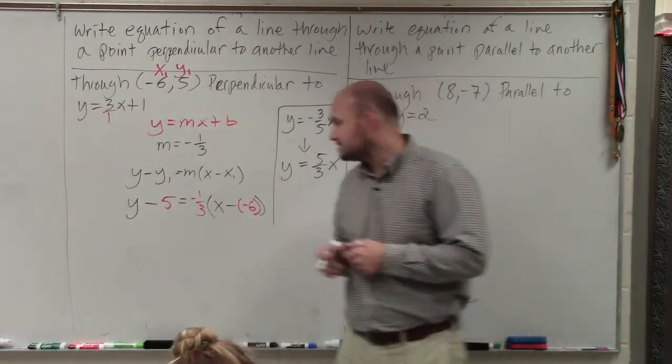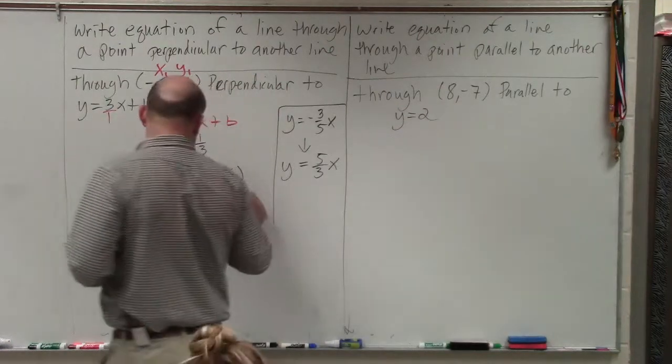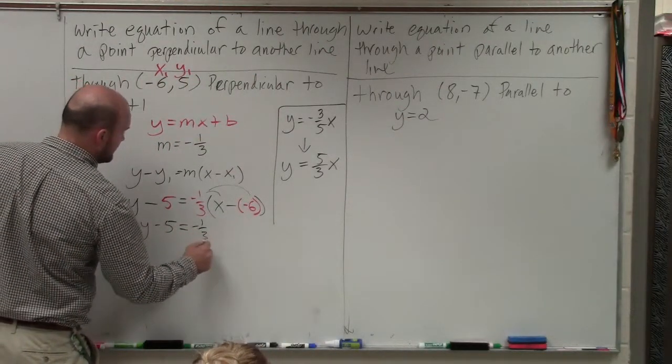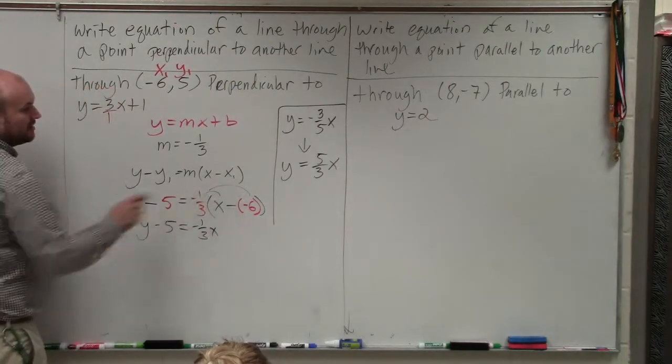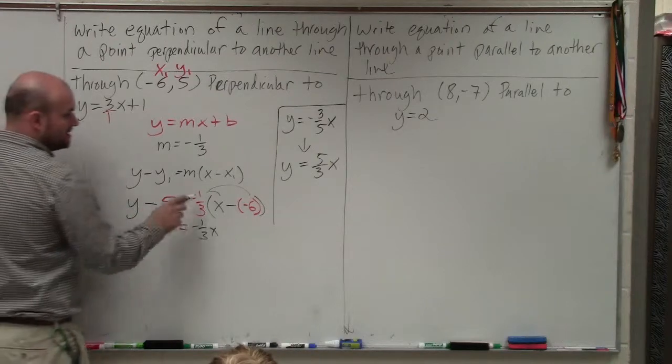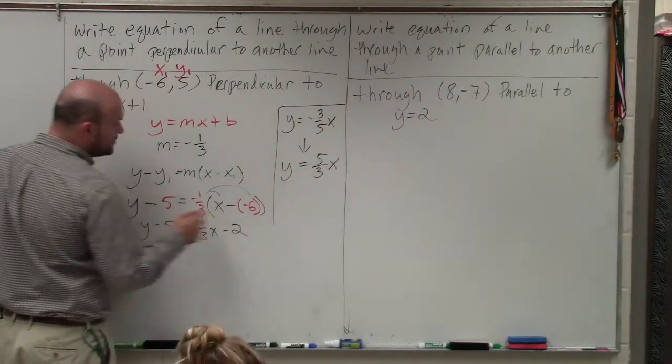Okay. Now we simplify and apply the distributive property. So you'd have y minus 5 equals negative 1 third x. Minus negative 6 becomes positive 6. Negative 1 third times positive 6 is negative 2.